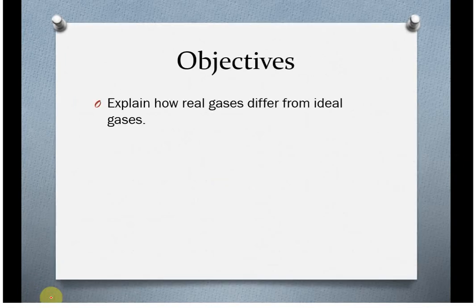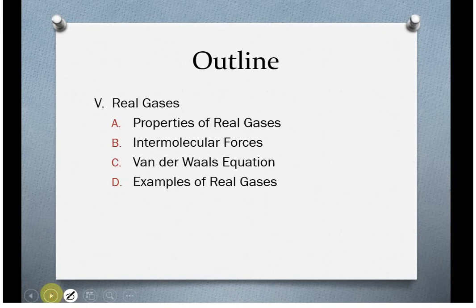So here we're just going to look at how real gases differ from ideal gases. We'll also look a little bit at explaining the properties or the conditions when that happens the most. So real gases, we're first going to define the properties of real gases. We're going to look at what makes them real, specifically the intermolecular forces. And then we're going to look at how we correct for that mathematically. And then I'm just going to discuss a couple of examples of real gases before we end.